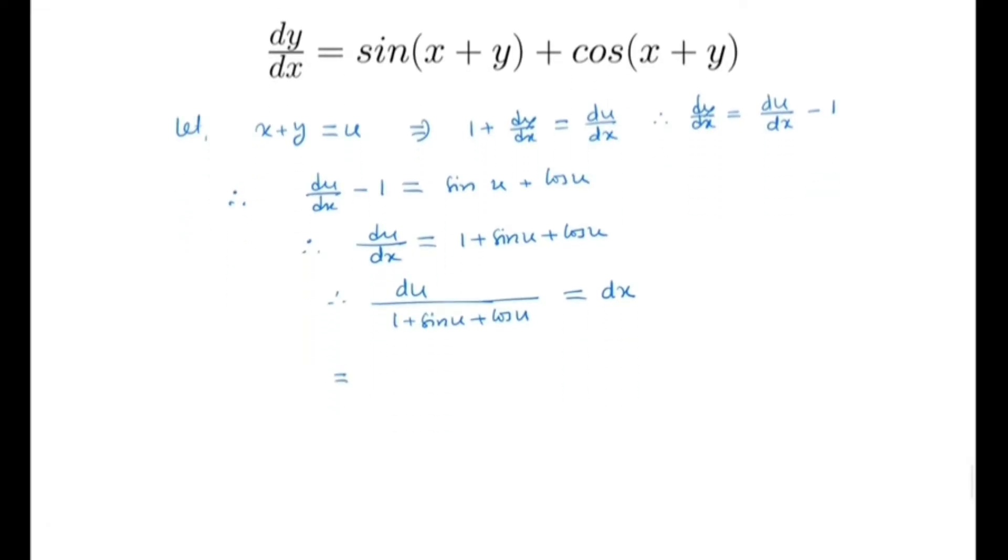Note that we get a separable equation here. So we take the integral of both sides, then we get integral du by 1 plus sin u plus cos u is equal to integral dx. In the left hand integral, we can write sin u as 2 sin(u/2) cos(u/2), and 1 plus cos u is 2 cos squared(u/2), and the right hand side is x plus c.